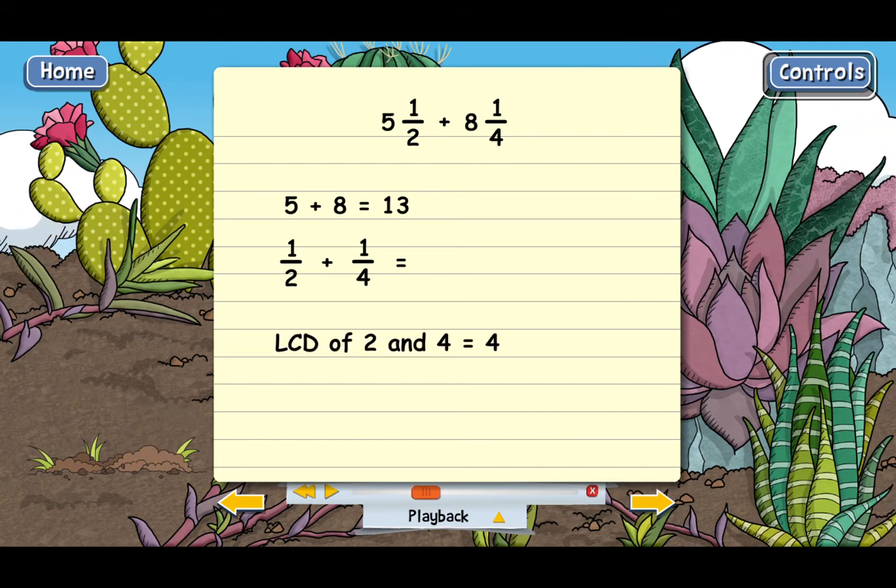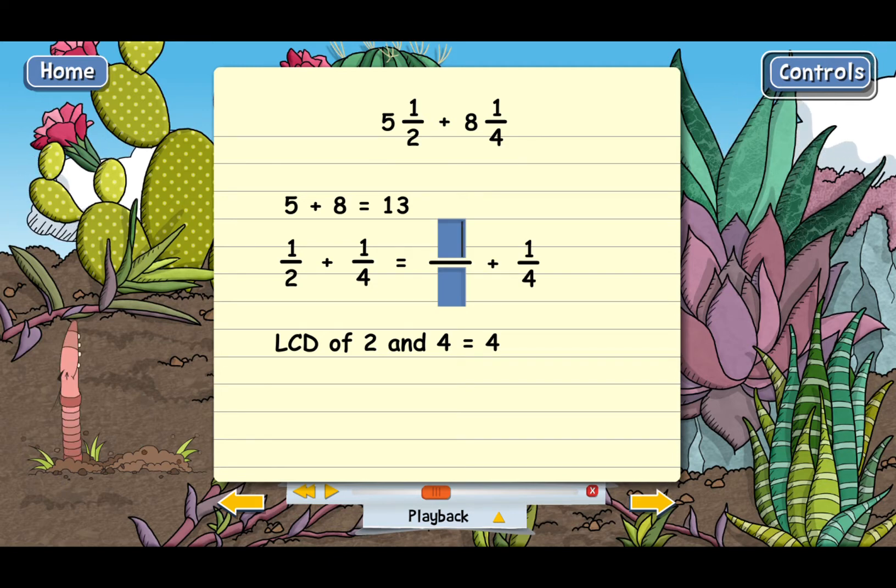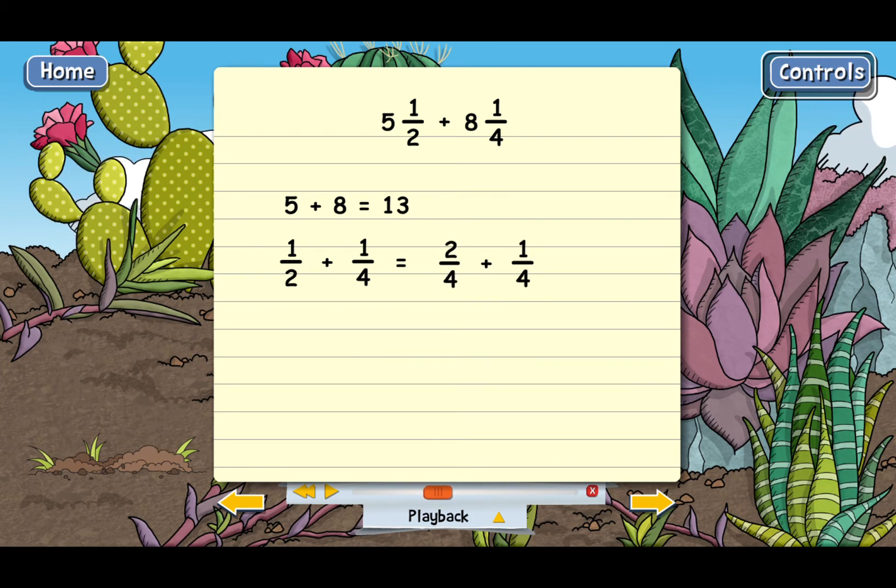And there's no need really to go through our formal method for calculating the LCD here. But why don't you go ahead and multiply one half to make the denominators the same? And don't forget the law of equivalent fractions. Good. So that gives us two fourths plus one fourth. Now go ahead and add the fractions.